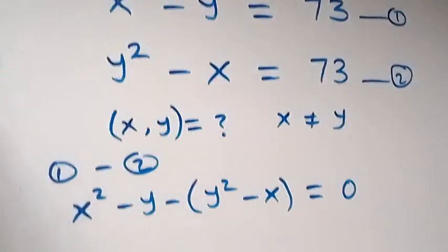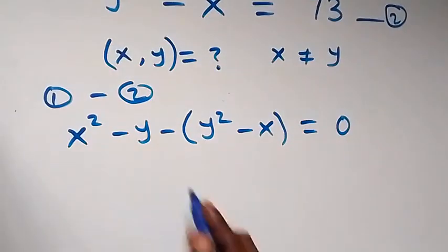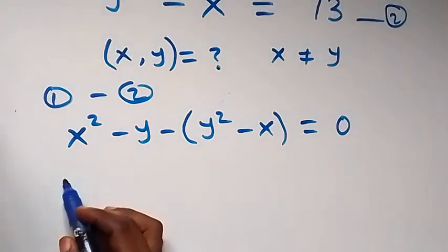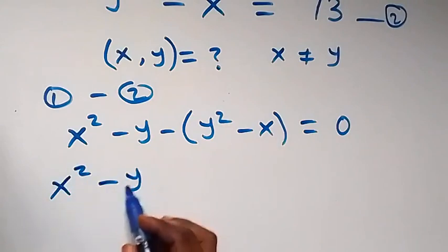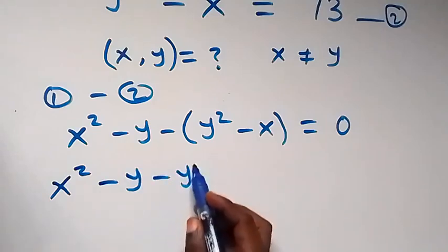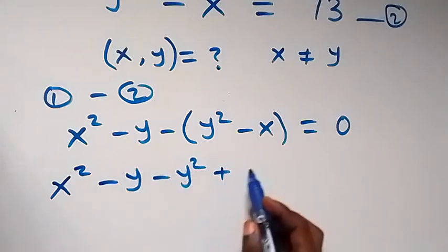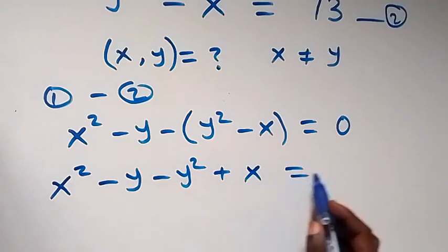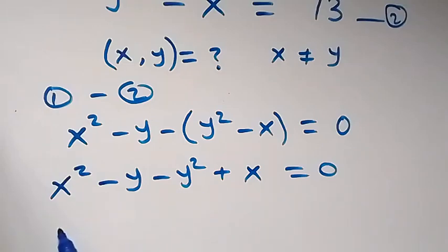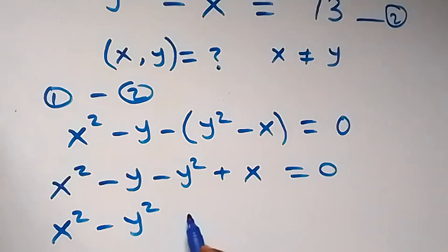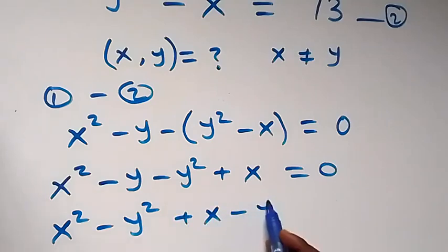From there, here minus here — open brackets — this becomes x squared minus y minus y squared plus x, now equals to zero. From here, let's group the squares together, so we have x squared minus y squared, and we can write the remaining terms as plus x minus y.